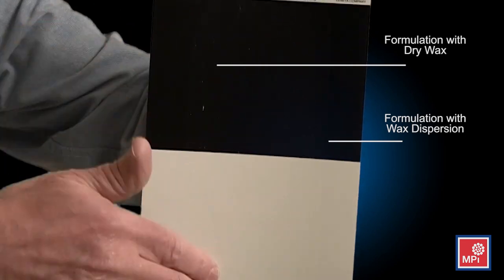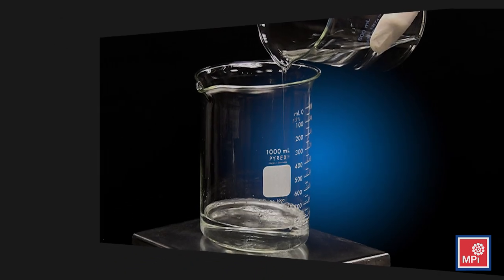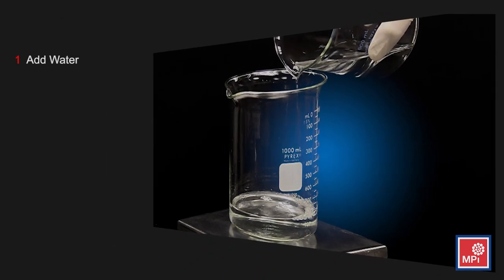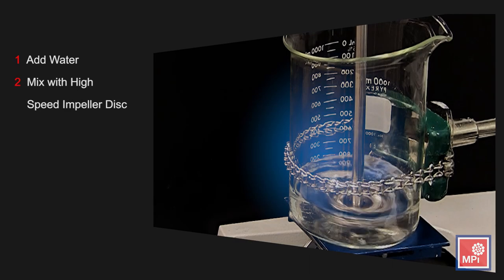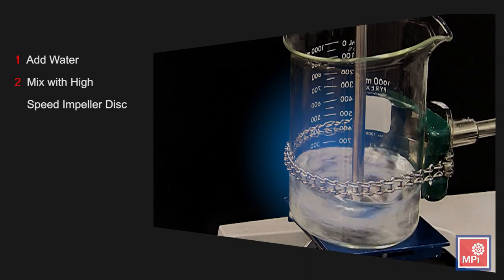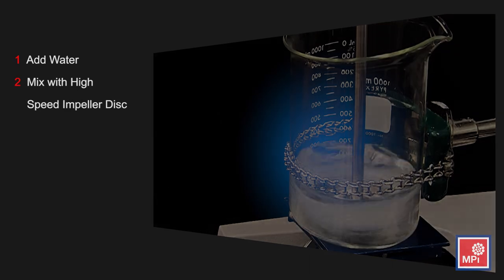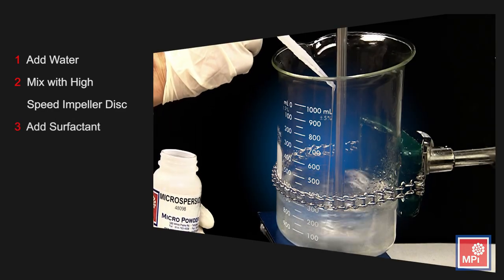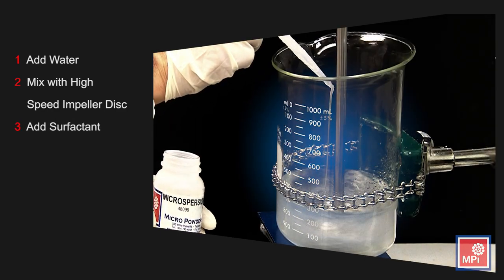So let's quickly review our recommendations for dispersing dry micronized wax. Add most of the formulation's water to the container, mix with a high-speed impeller disc at 1000 revolutions per minute, and add a surfactant or wetting aid to reduce the surface tension of the water.